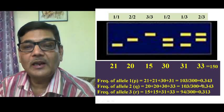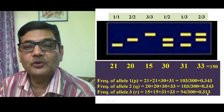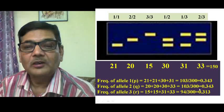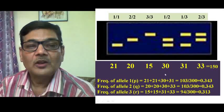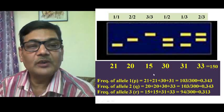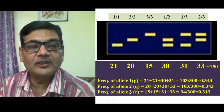When you add the frequencies P + Q + R together, it will come to 1, or very close to 1. This is the way we can calculate the frequency of allele 1, allele 2, and allele 3.